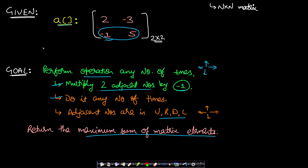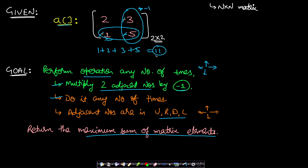In this given array, I will pick -1 and 5 and multiply them by minus 1 so the negative is removed from -1 and transferred to 5. Now 2 and 1 are positive while -3 and -5 are negative. So choose -3 and -5 and multiply with minus 1 again — the negatives cancel out. All numbers become positive and the final sum is 1+2+3+5 = 11. We cannot get any value greater than 11, so 11 is the answer.